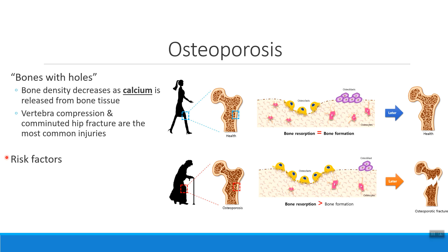When we think about risk factors for developing osteoporosis, some are within a person's control and some are not. One factor not within a person's control is their sex. Females are at a much higher risk of developing osteoporosis than males. When a woman goes through menopause, she's no longer making estrogen, the hormone that helps maintain bone mass. Males continue to synthesize testosterone, putting females at much higher risk.